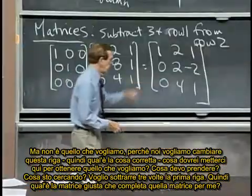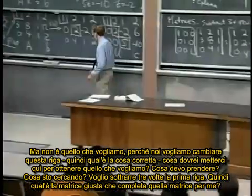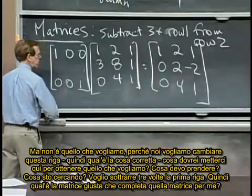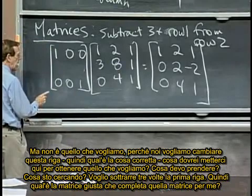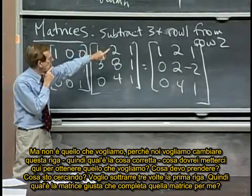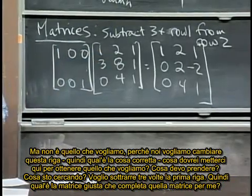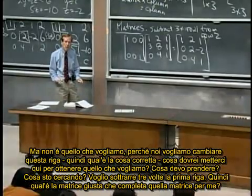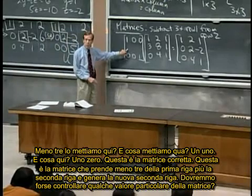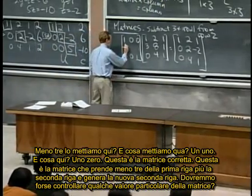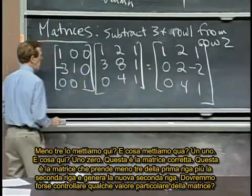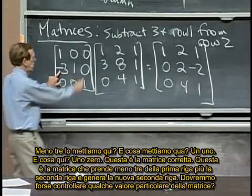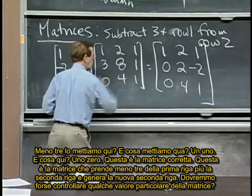But that's not what we want, because we want to change this row two. So what's the correct? What should I put in here now to come out to do it right? I want to get, what do I want, what am I'm after? I want to subtract my, I want three of row one to get subtracted off. So what's that row, what's the right matrix to finish that matrix for me? Negative three goes here. And what goes here? That one. And what goes here? The zero. That's the good matrix. That's the matrix that takes minus three of row one plus the row two and gives the new row two.